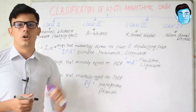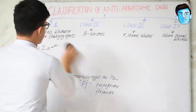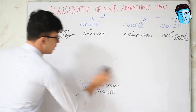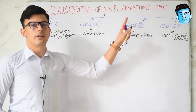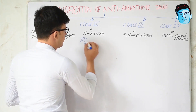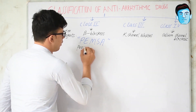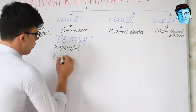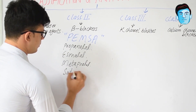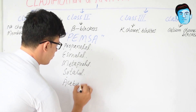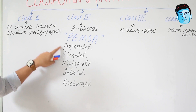Now we will switch to class 2 anti-arrhythmic drugs. As we know, class 2 are beta blockers. For the beta blockers that are anti-arrhythmic, we have a trick: PEMSA. PEMSA stands for propranolol, esmolol, metoprolol, sotalol, and acebutolol.